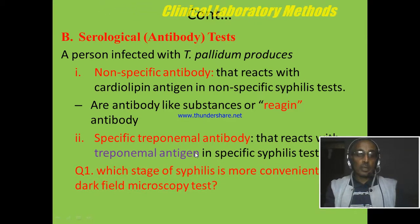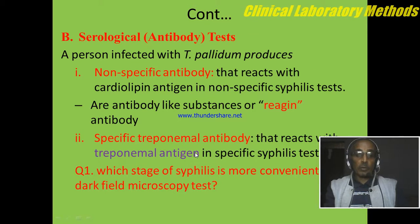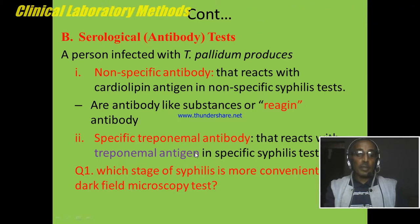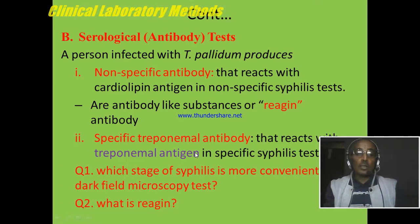Summary questions: Which stage of syphilis is more convenient for dark field microscopy tests? Second question: What is reagin?